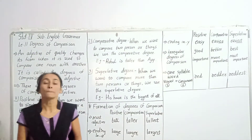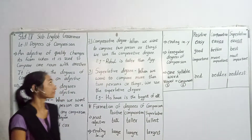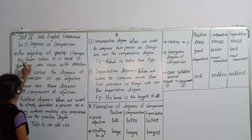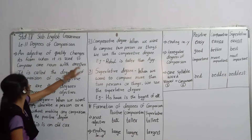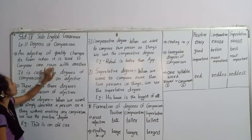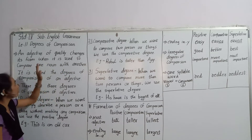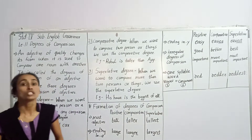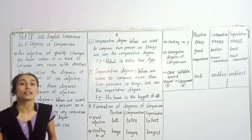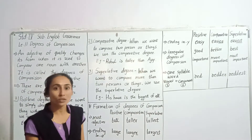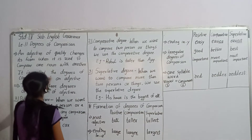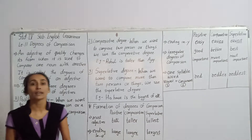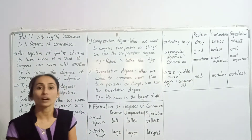Degrees of Comparison kya hai? An adjective of quality changes its form when it is used to compare one noun with another. When we use comparison to the other noun, it is called the degree of comparison.